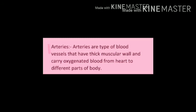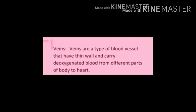Arteries are a type of blood vessels that have thick muscular walls and carry oxygenated blood from the heart to different parts of the body. Veins are a type of blood vessels that have thin walls and carry deoxygenated blood from different parts of the body to the heart.